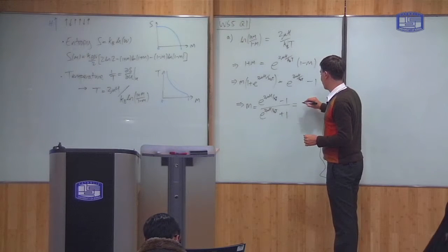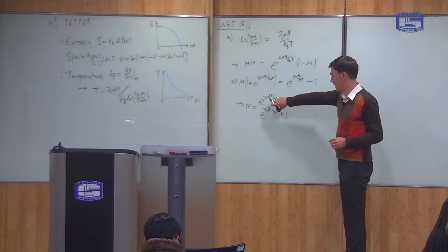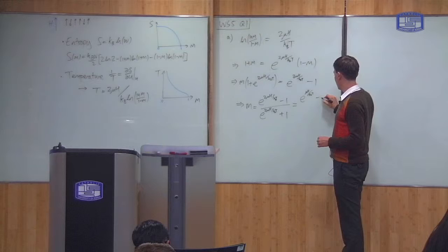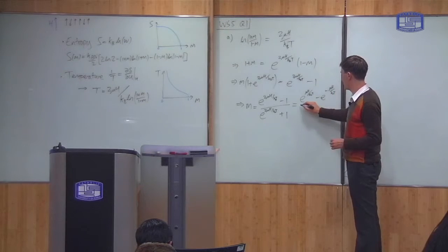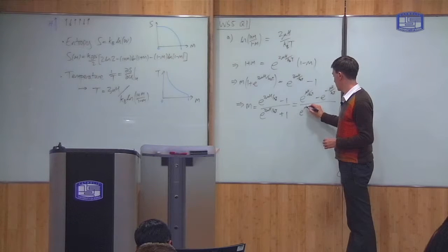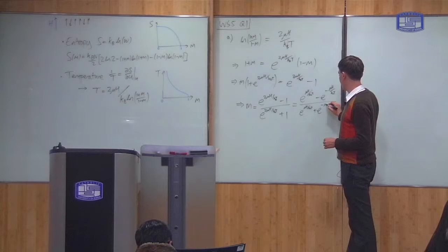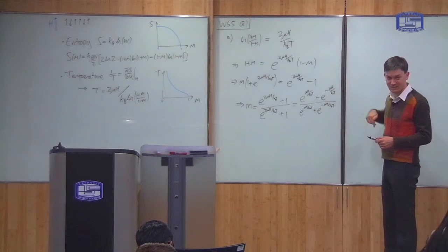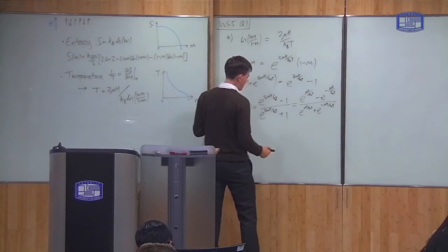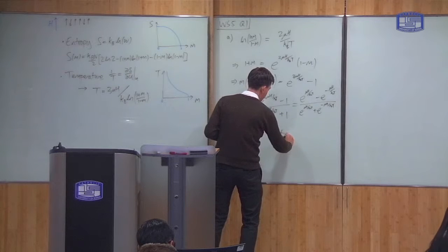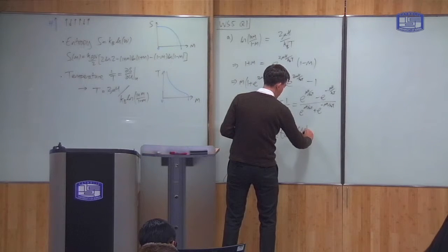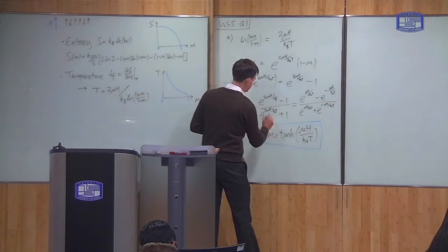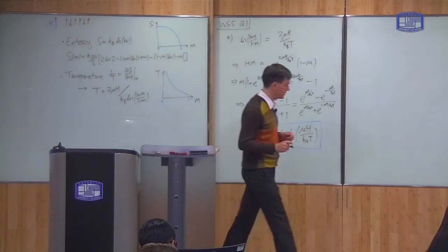The question asks you to write it in terms of a hyperbolic tangent function. To do this, multiply top and bottom by e^(-μH/kBT), giving (e^(μH/kBT) - e^(-μH/kBT)) / (e^(μH/kBT) + e^(-μH/kBT)). This is exactly the hyperbolic tangent function, so our result is M = tanh(μH / kBT).